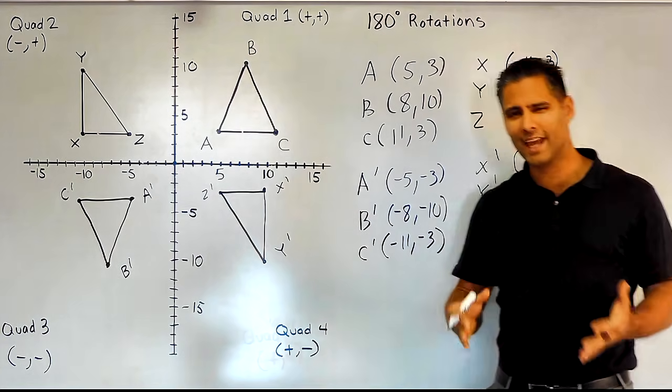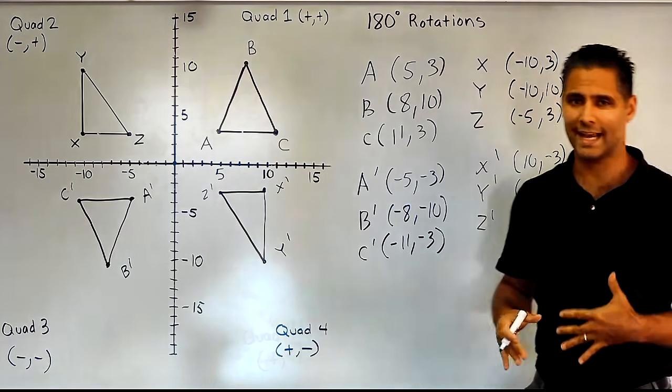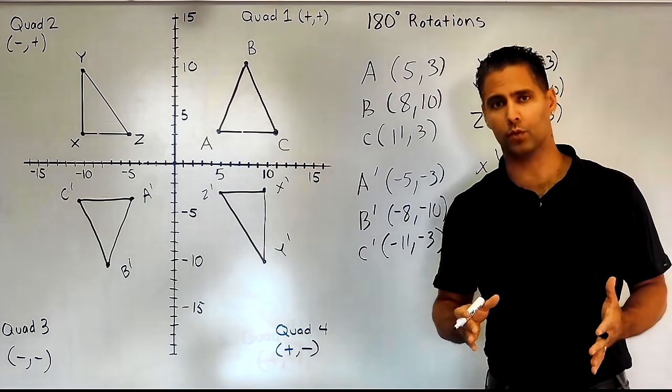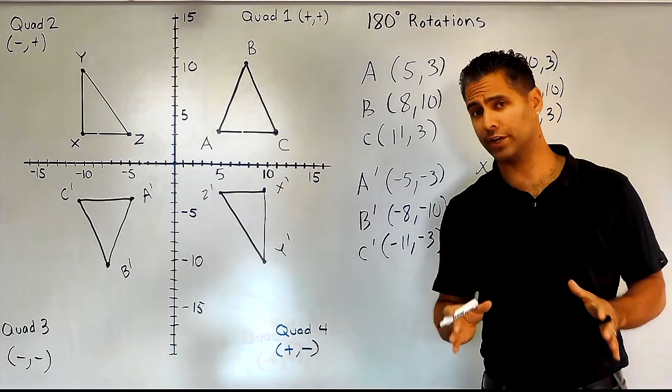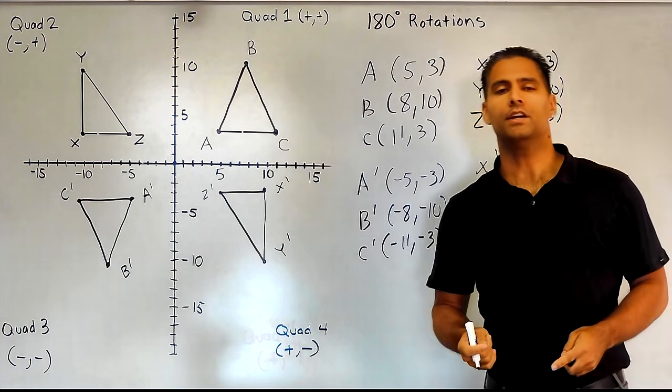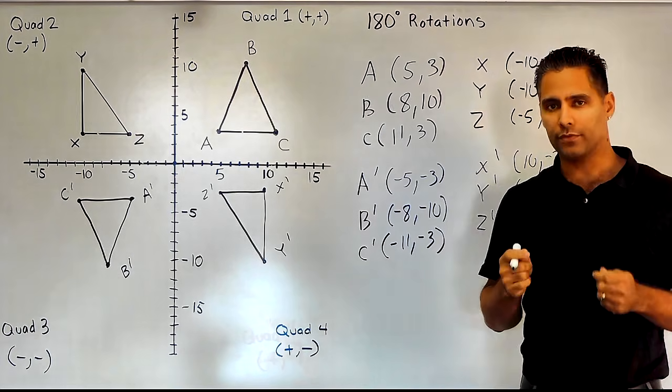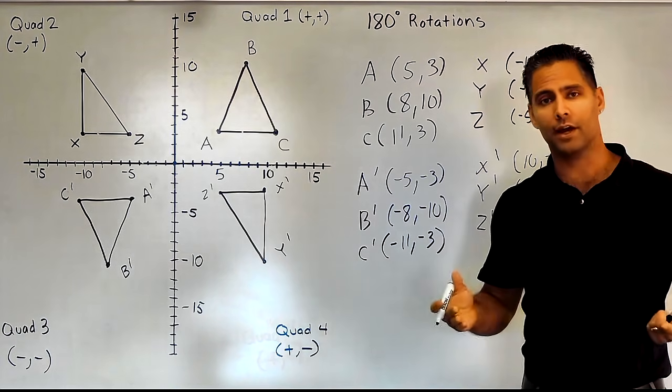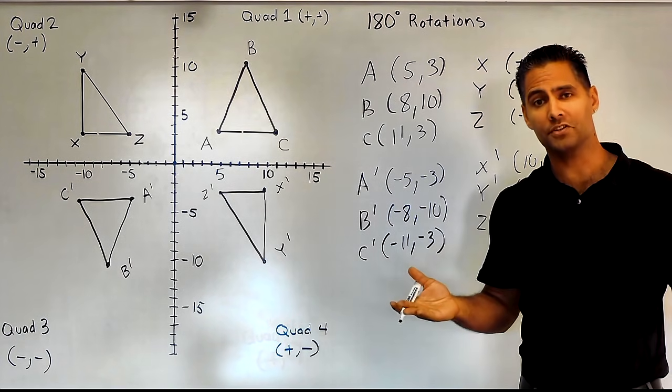And that's all you really have to do when rotating objects around the coordinate plane 180 degrees — just take each one of your values and write its opposite integer.